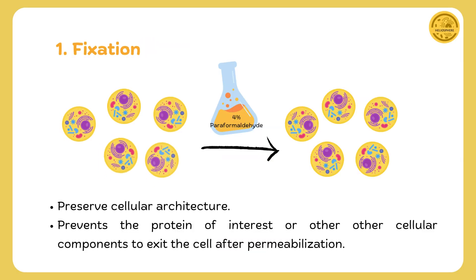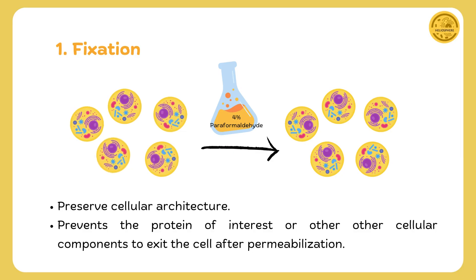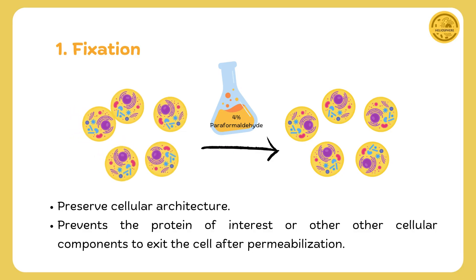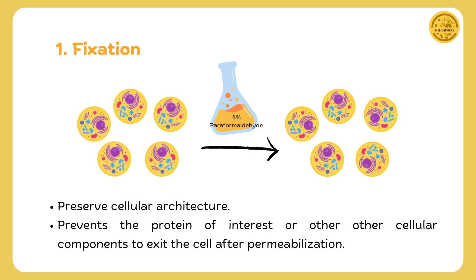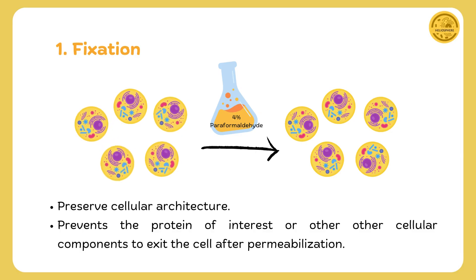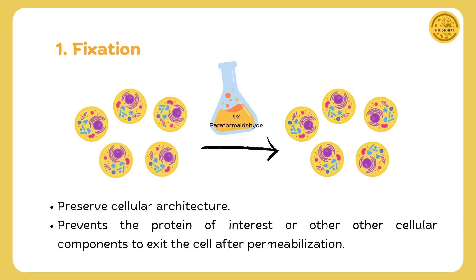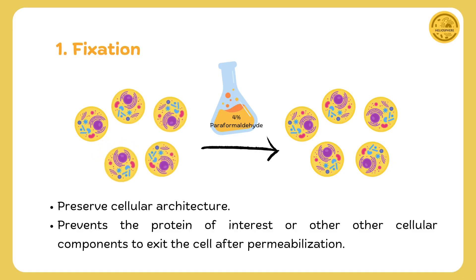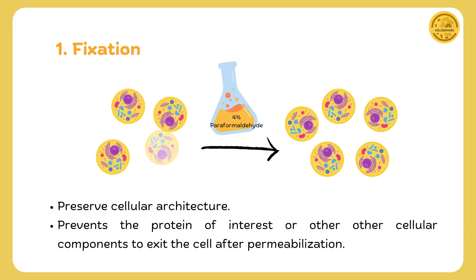First, we perform fixation. Here, we use chemicals like paraformaldehyde or methanol to freeze the cells and preserve their structure. Think of it as setting a snapshot of the cell's architecture so that everything remains in place for accurate analysis.